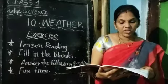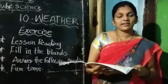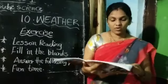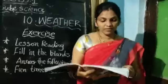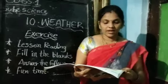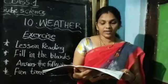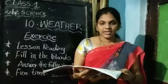Second one: We use dash on a rainy day. The answer is umbrella. We use umbrella on a rainy day.